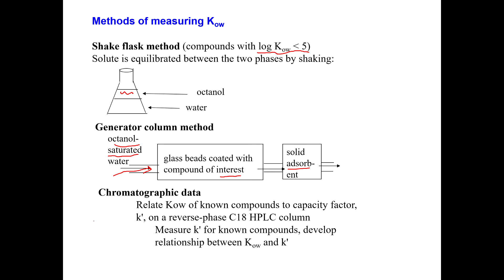But most measurements of KOW these days are done using chromatography, where you relate the KOW value of a known compound, a compound for which KOW has been measured and you're pretty sure you have it right. And then you analyze those on a liquid chromatograph where you're letting the compound partition between the liquid phase, which is water, and the stationary phase, which is like octanol, similar to octanol.